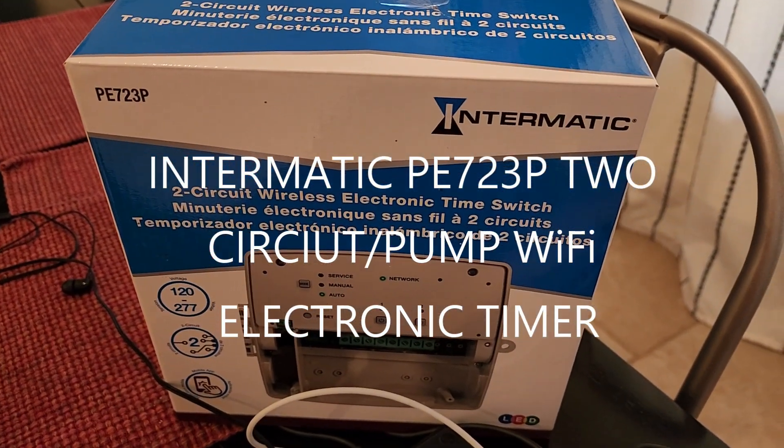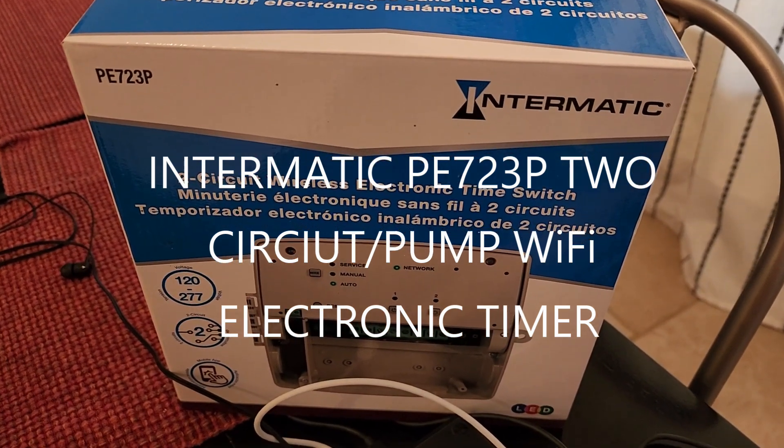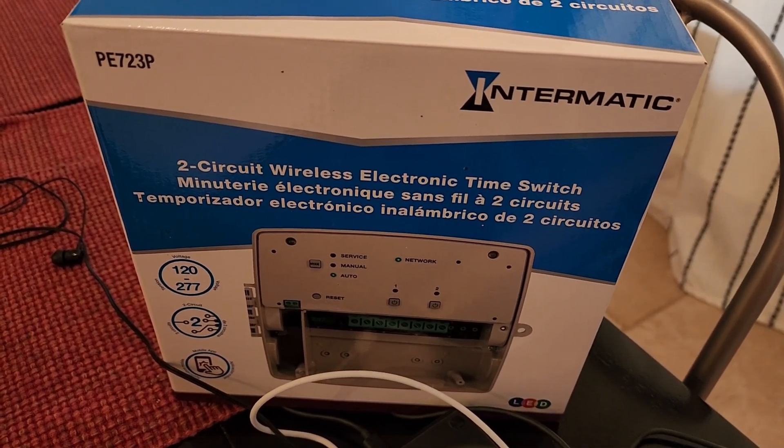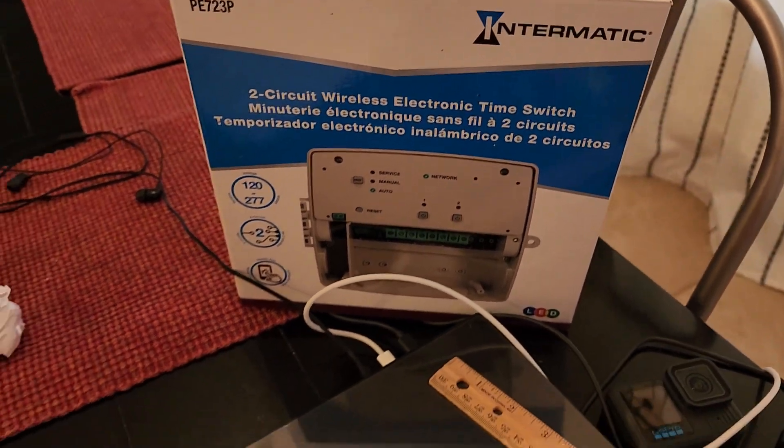Welcome back to the Half Thumb Homestead. I purchased and wired up an Intermatic PE723P. This is a Wi-Fi controlled network, app controlled pool pump timer.